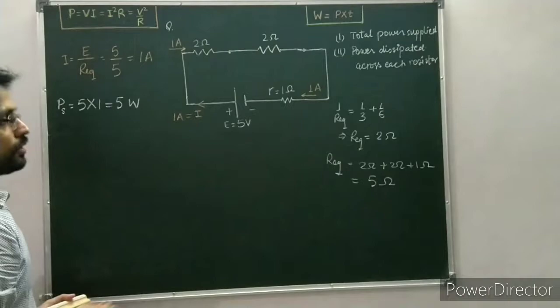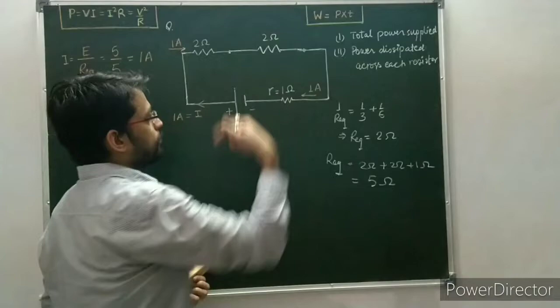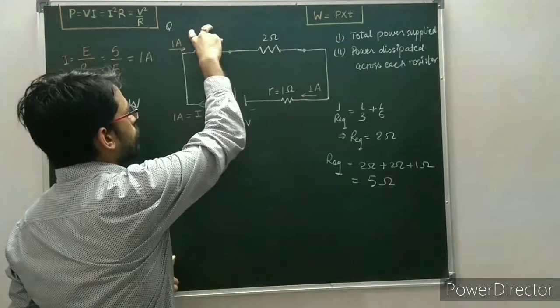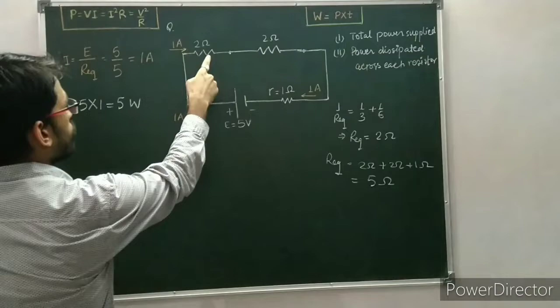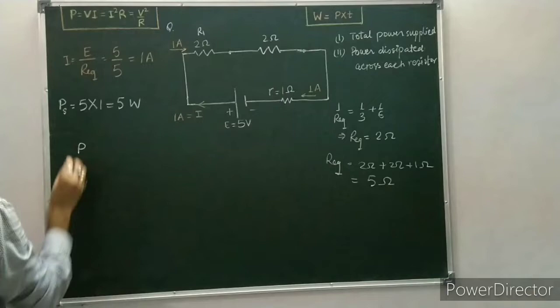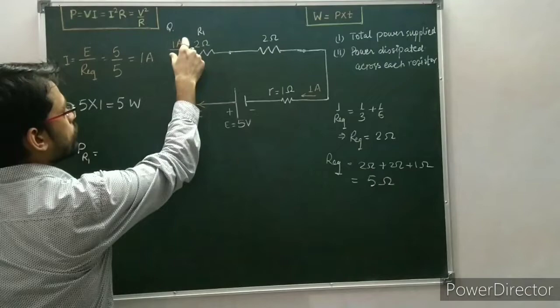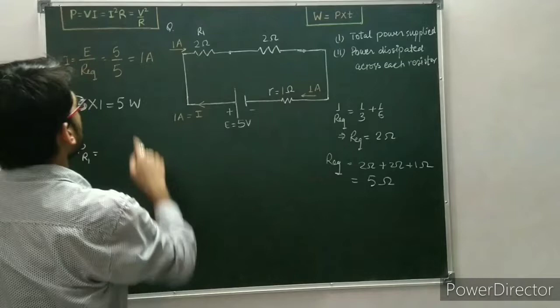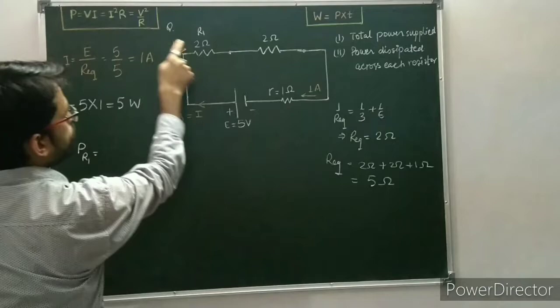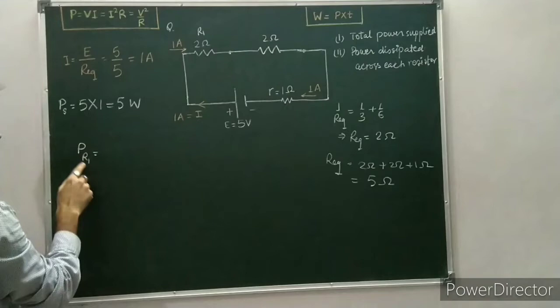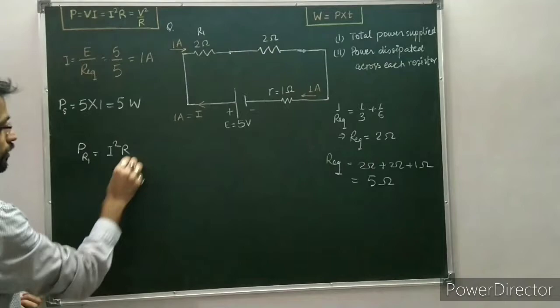I'll leave the parallel resistors for now and come back after calculating the power dissipation across these two resistors. For resistor R1, since we know the current through R1 and the resistance of R1, the second formula — P = I²R — is suitable for the calculation of power here.